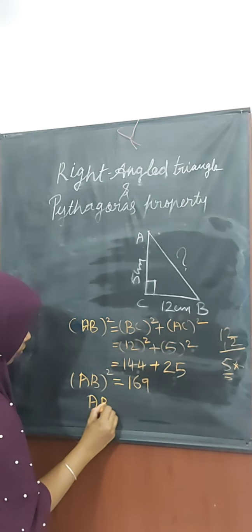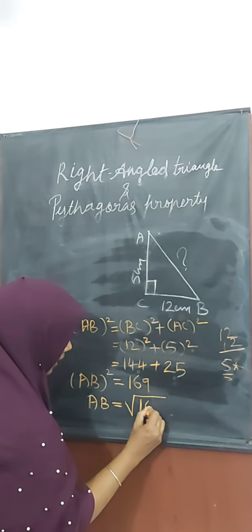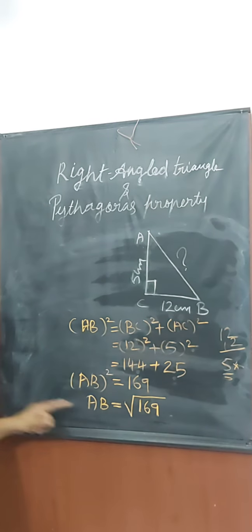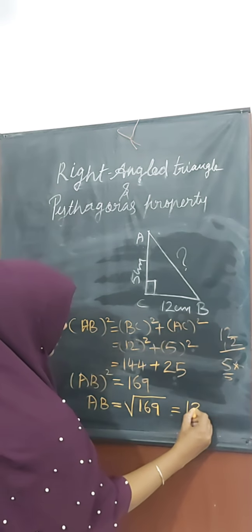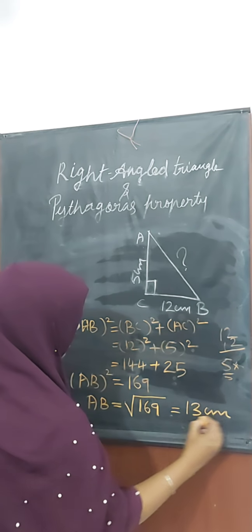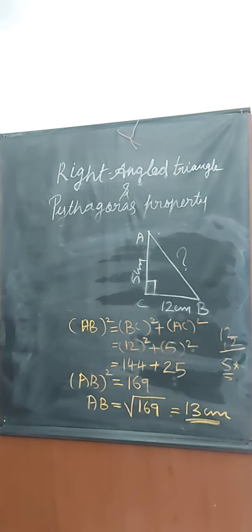AB equals root 169. We get 13. AB equals 13 cm.